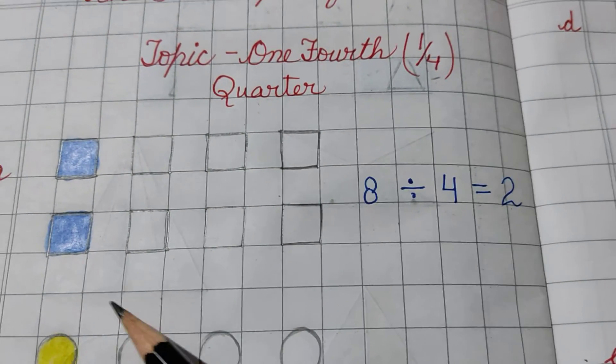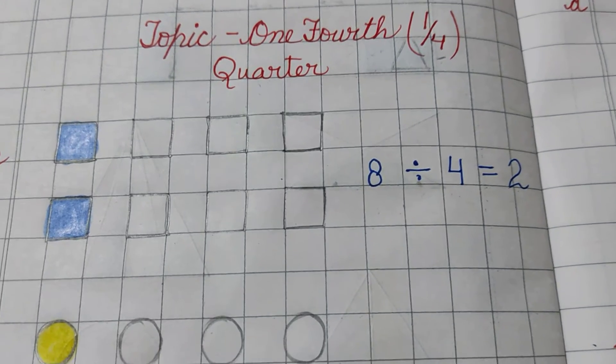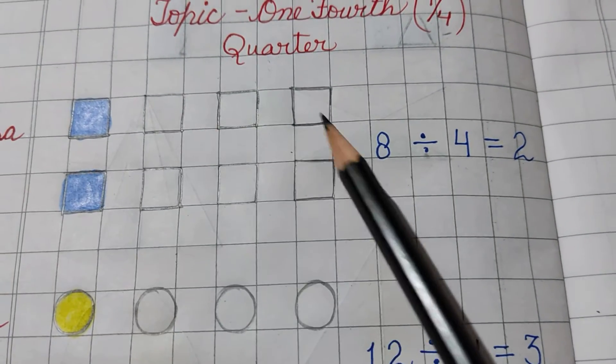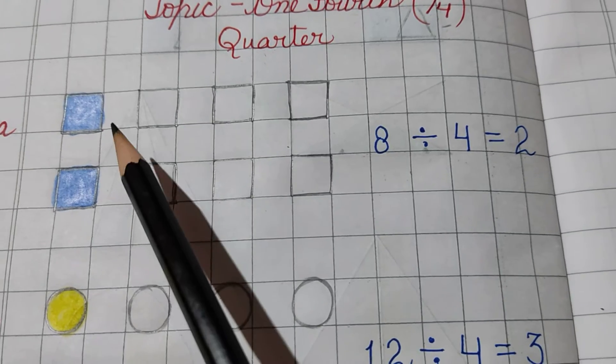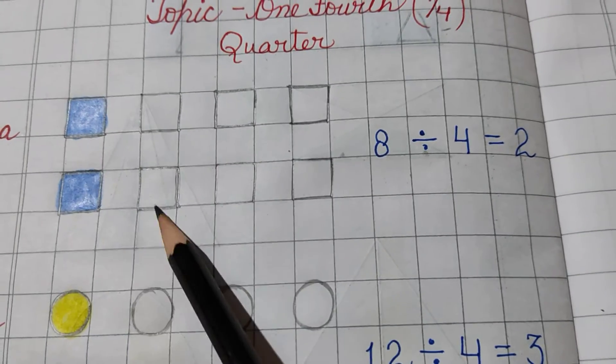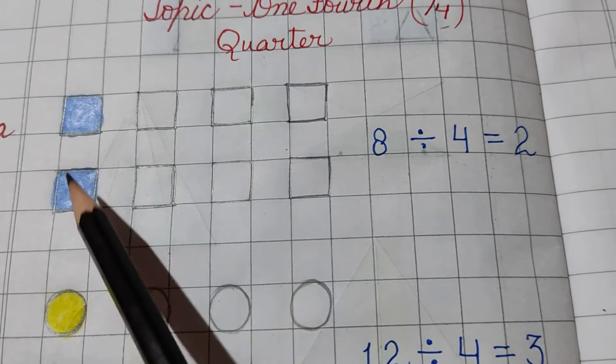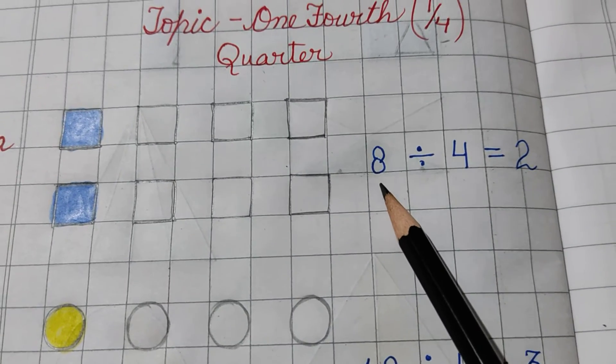In today's video, we will do this in the same way. In part A, I have drawn some squares here. Let's count 1, 2, 3, 4, 5, 6, 7, 8. These are 8 squares, so I have written 8 here.